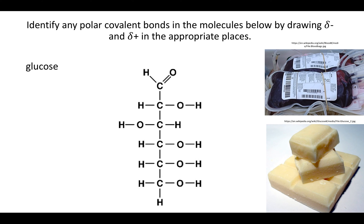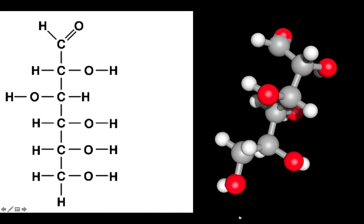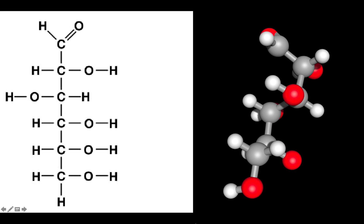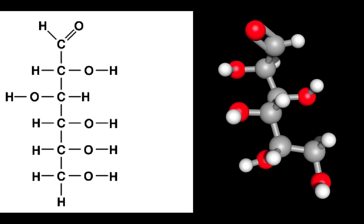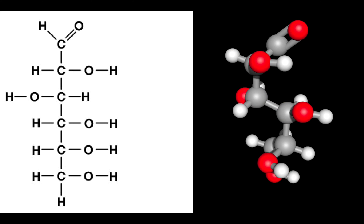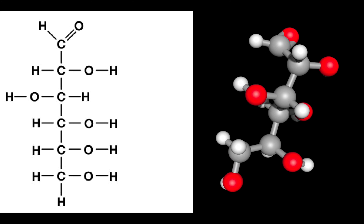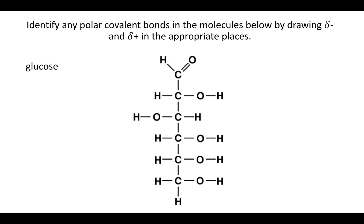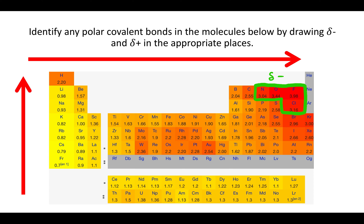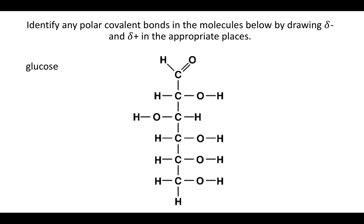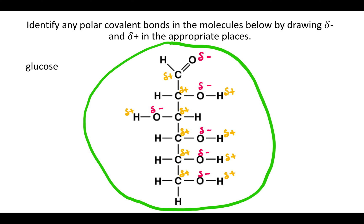Finally, glucose — which is blood sugar. You can see it dissolved in blood at the top, and in the bottom right what it looks like as a solid. This is what glucose looks like three-dimensionally. We look at the molecule and ask: is there a nitrogen, oxygen, fluorine, or chlorine? There are. So you'd write a slightly negative charge next to all of those with a lowercase delta minus, and then a slightly positive charge on anything those are bound to. Those are the partial charges for glucose.